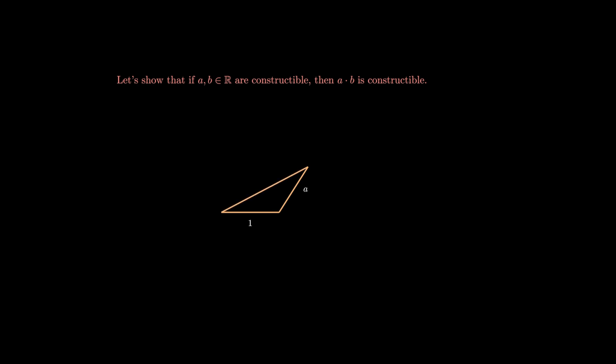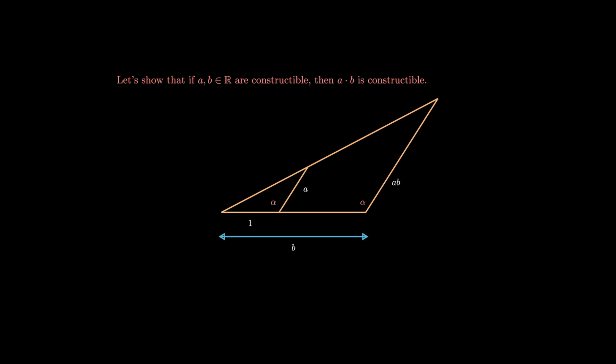We can use our ruler to draw a line of length 1. Forming any angle relative to this line, we draw the line segment of length A — we know how to do that since A is constructible. Join the edges of these two lines to form a triangle. Now extend the horizontal line so that the total length is B. Again, we can do that since B is constructible. Extend this line and, using your compass, measure the angle between the initial line and A, then draw a parallel line with the same angle. By similarity of triangles, the resulting length is exactly AB. So if A and B are constructible, then A times B is also constructible.